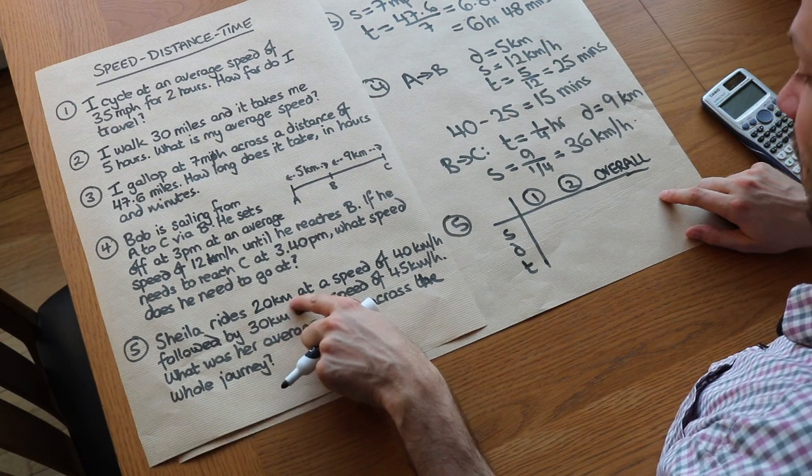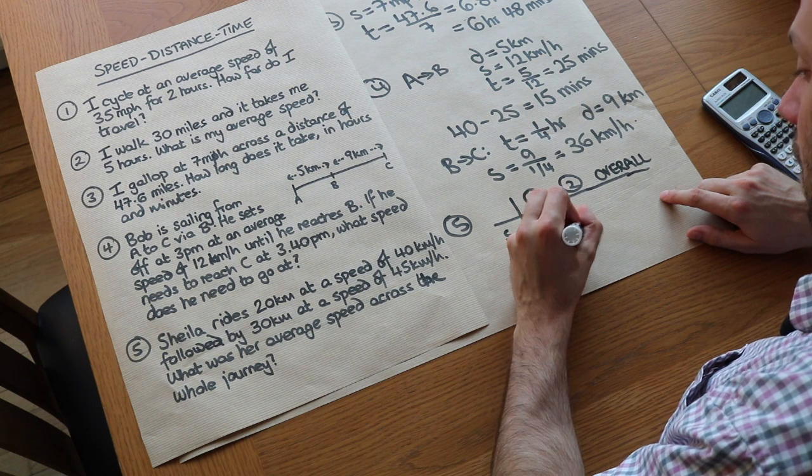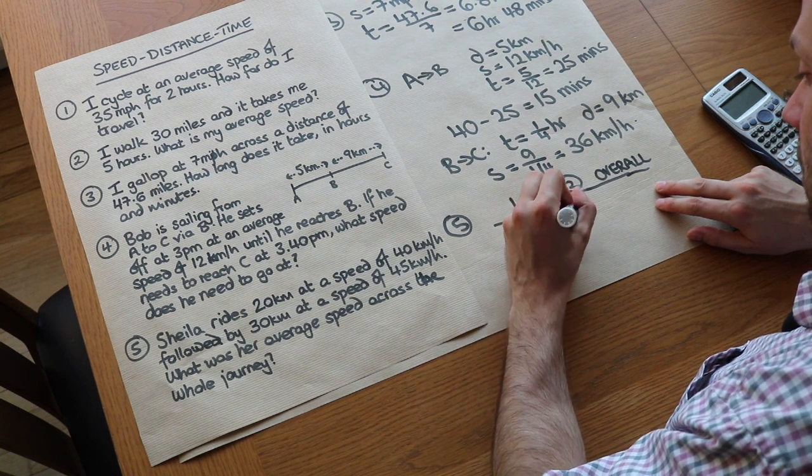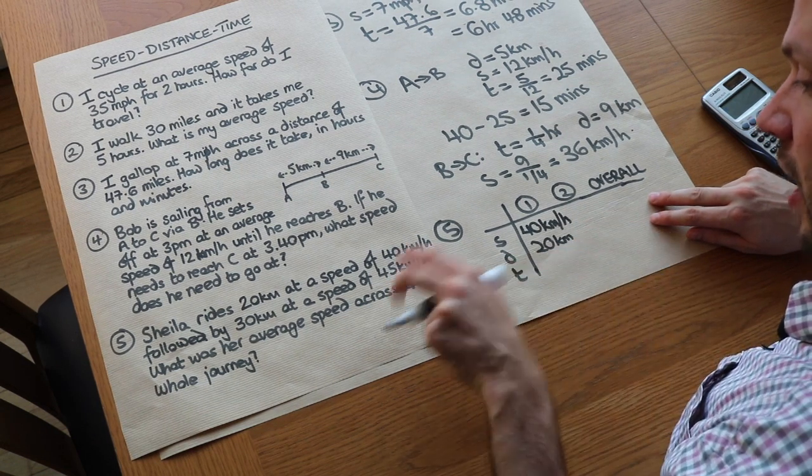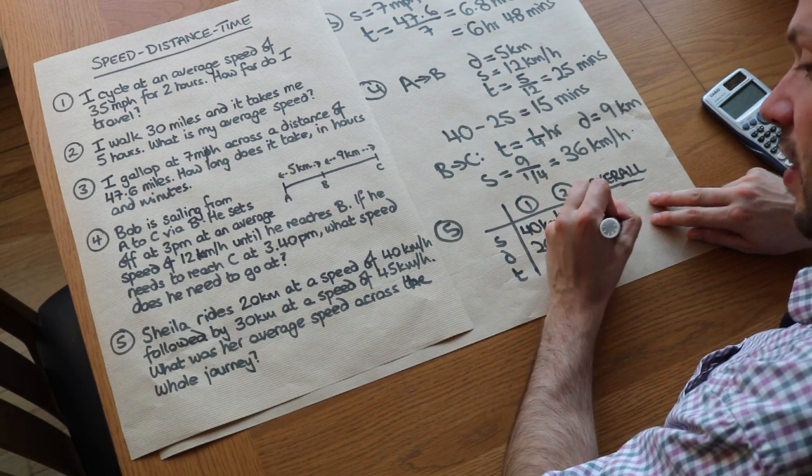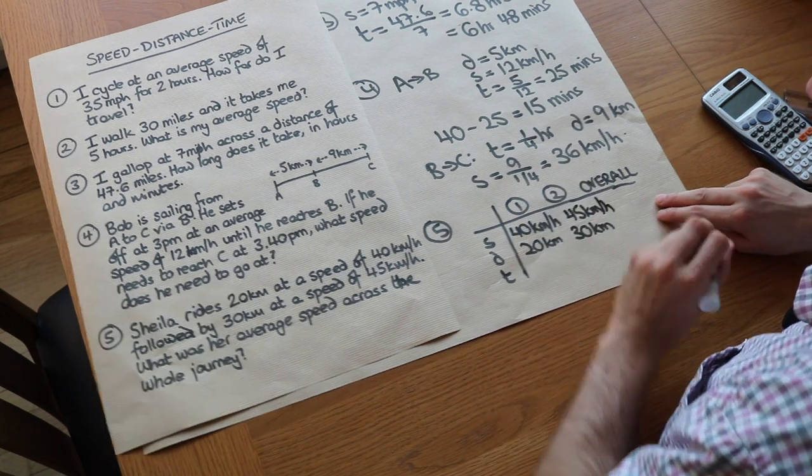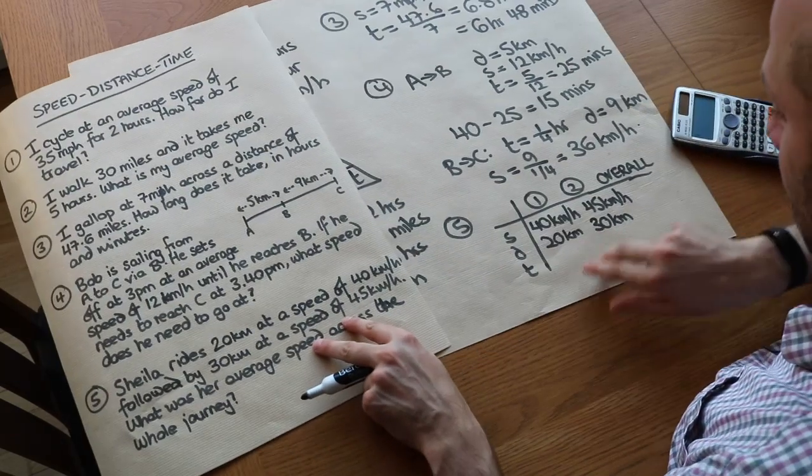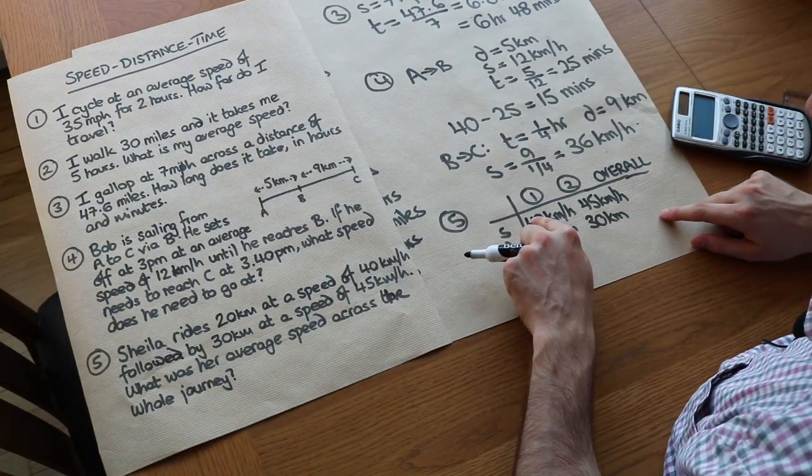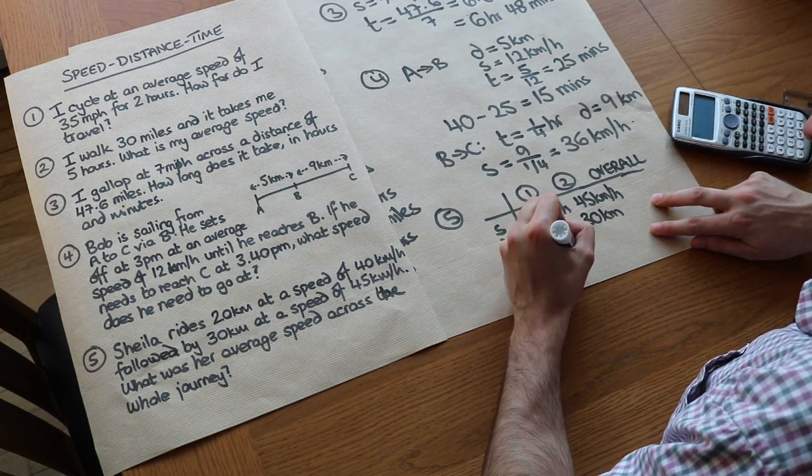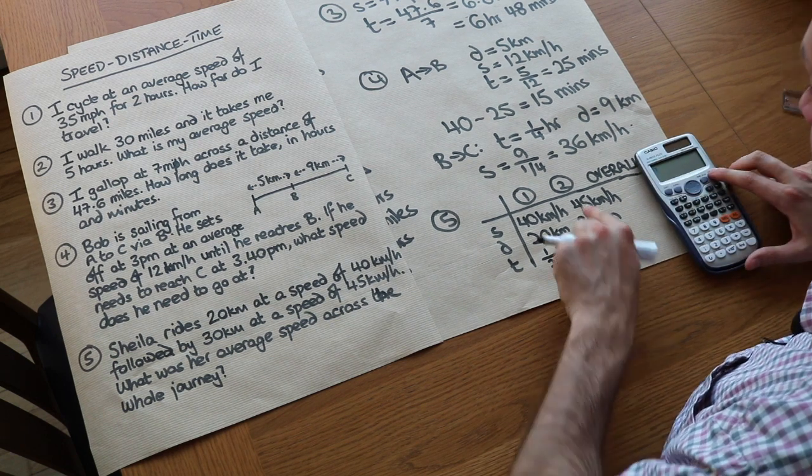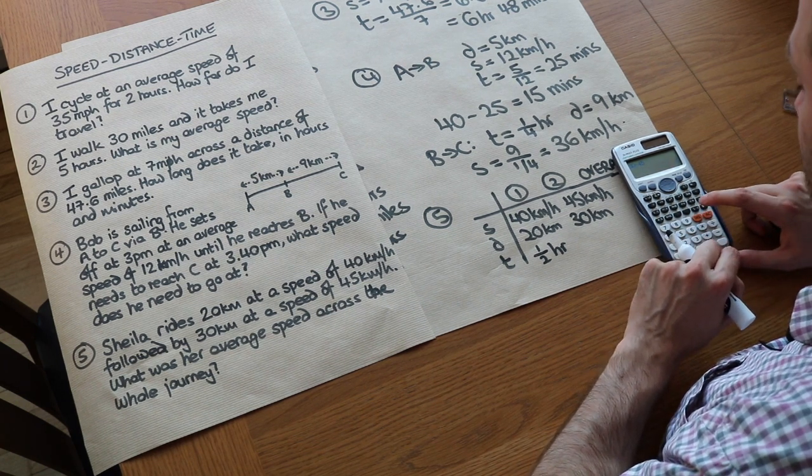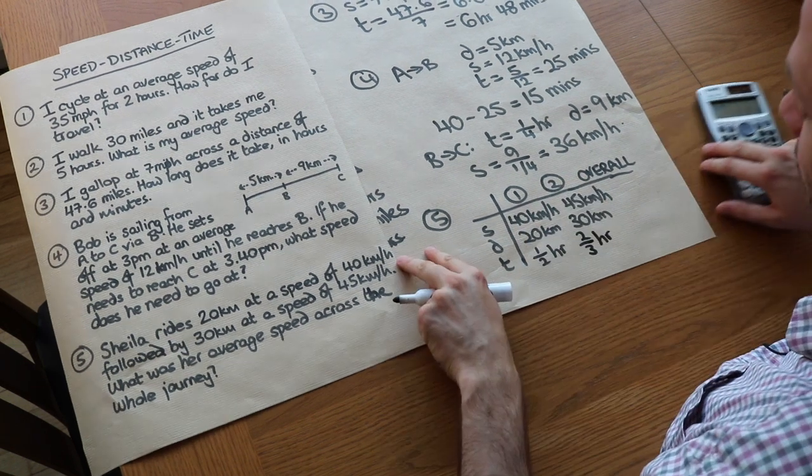Now what's great about this table is it's a really good way to organise all the bits of information in the question. She rides 20 kilometres initially, so the distance here is 20 kilometres. That's at 40 kilometres per hour, so let's put that here in the speed row. We'll work out the time in a second. In the second leg of the journey, we know she is going 30 kilometres at a speed of 45 kilometres per hour. Now let's work out these times. Time is equal to distance over speed, so it's 20 over 40, which is half an hour. The time here is 30 divided by 45, distance divided by speed, which is two thirds of an hour. Let's put that as a fraction rather than some nasty recurring decimal.